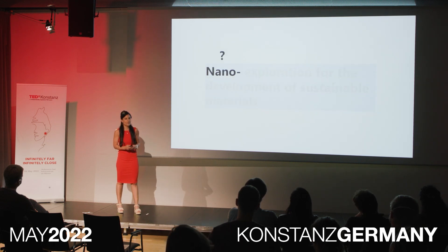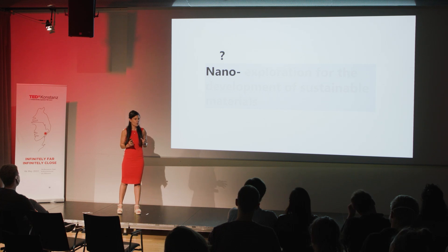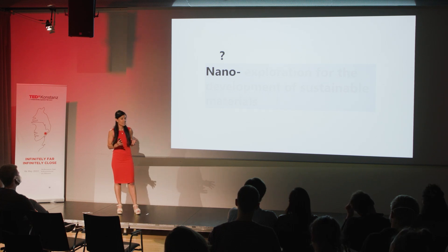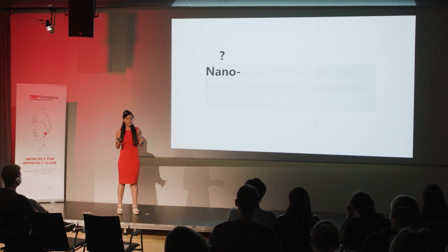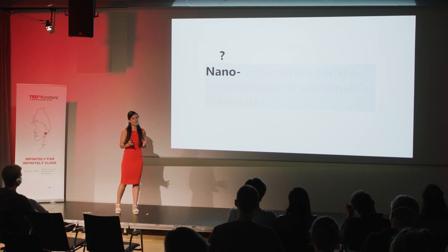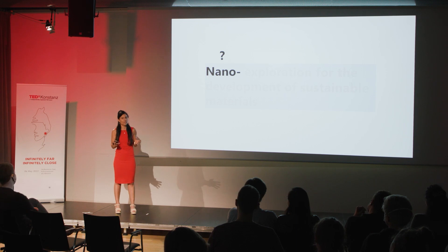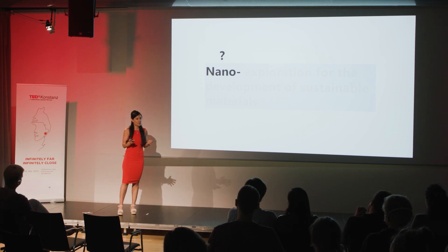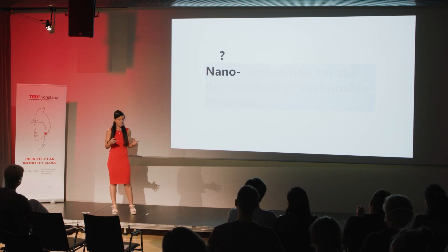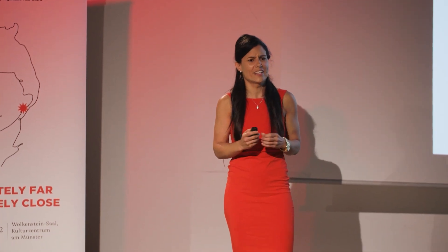The prefix nano is the Greek word for dwarf and it's used to refer to something that is really, really small. When we talk about nano sizes, we use the term nanometer, which is one billionth of a meter — 10 to the power of minus nine meters, something really really small.